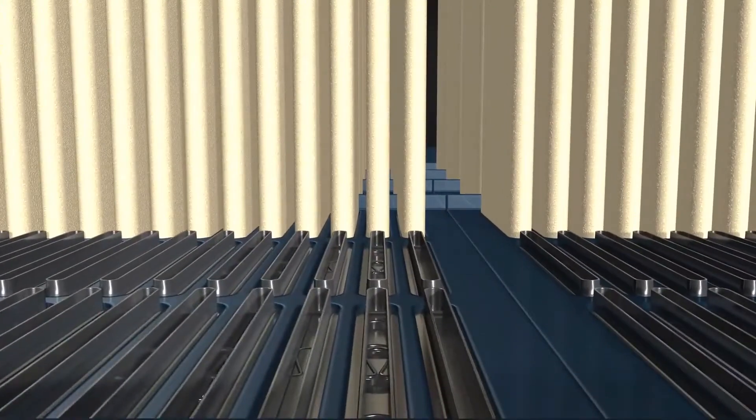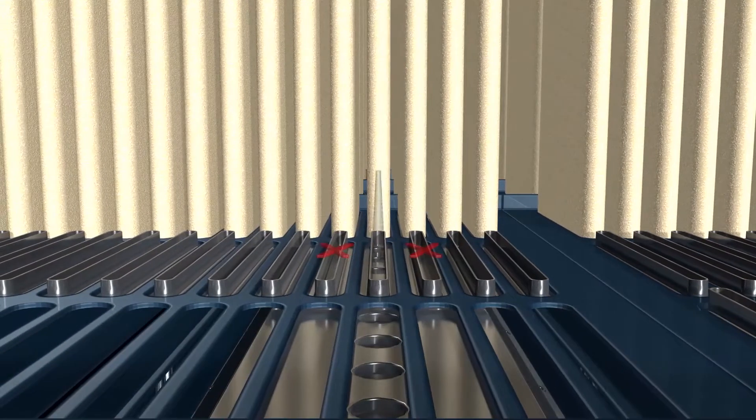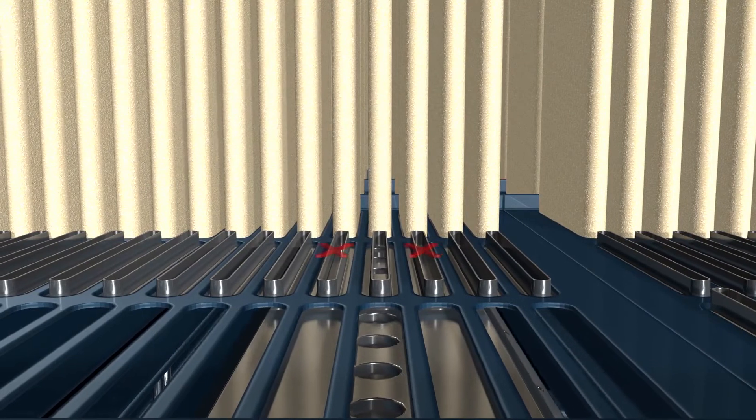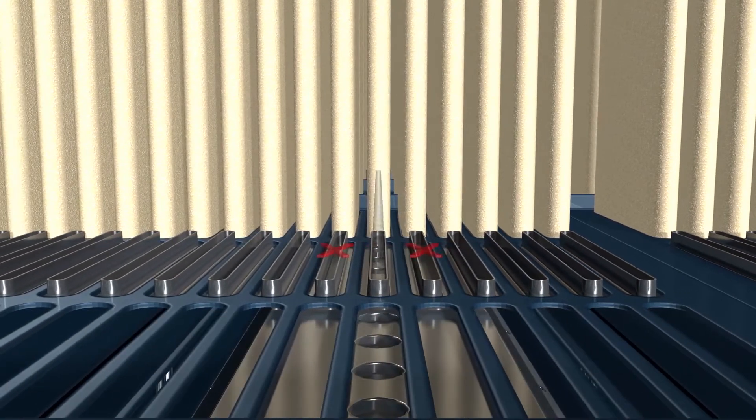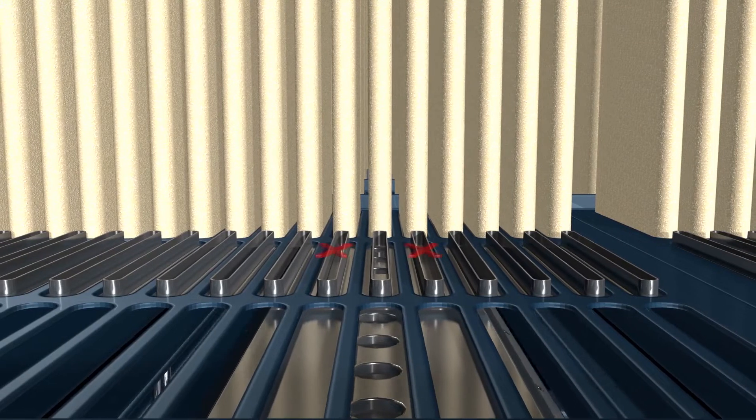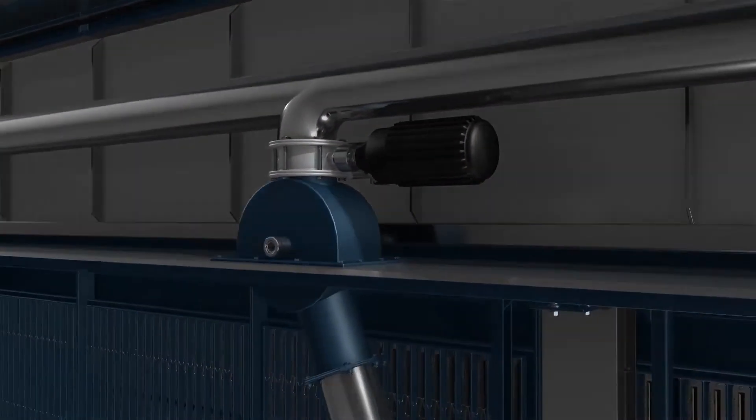The cleaning carriage moves from one filter row to the next, initiating the cleaning cycle on each row. The detached dust cake is prevented from caking on neighbouring filter bag rows during the cleaning process, as the adjacent filter bag rows are offline during the cleaning process.